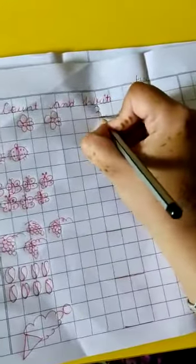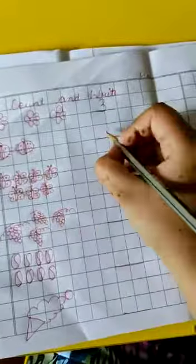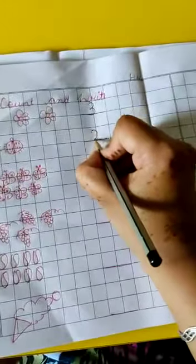1, 2, 3 - there are 3 flies, write down number 3 here. 1, 2 - there are 2 ladybugs, write down number 2 here.